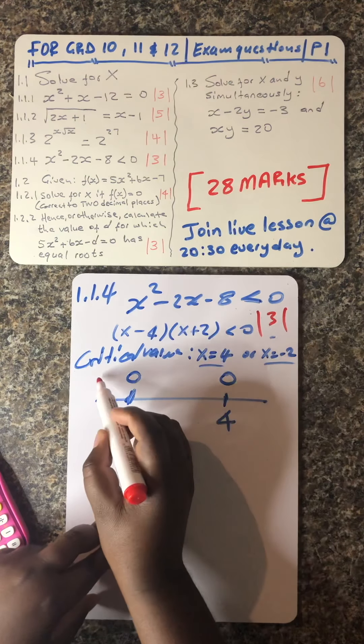You can also give this answer differently by saying x is greater than negative 2 and x is less than 4. So these are the ways you can give answers to this question. Before I forget, I have to show you exactly where you score your marks: your first mark comes from the factors, the next mark comes from the critical values, and the last mark comes from the final answer.